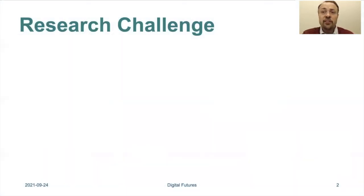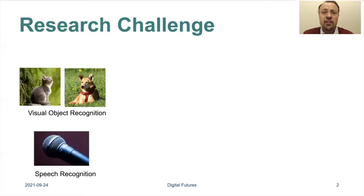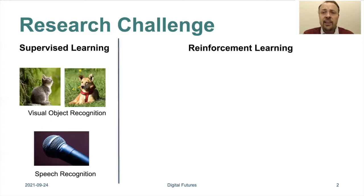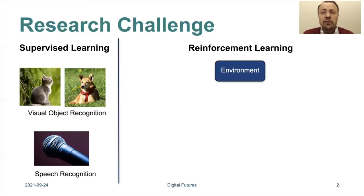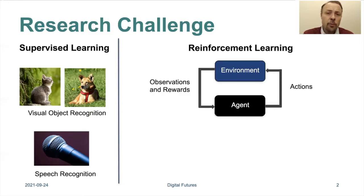Machine learning has been very successful in today's society, especially in areas such as visual object recognition or speech recognition. These are forms of supervised learning. Another area is reinforcement learning, where you have an environment and an agent performing different actions on the environment. In this way you can observe and sample from the environment and get rewards to improve the agent's performance on a certain task.